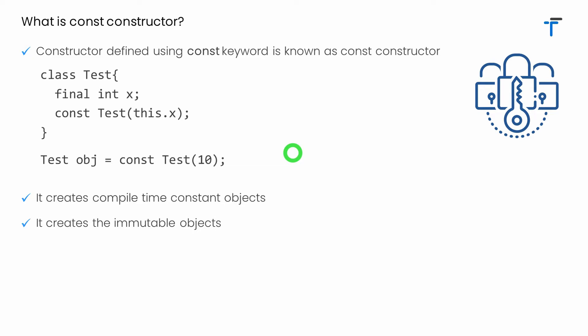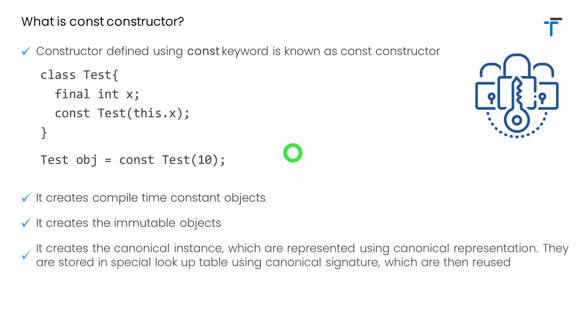Now let me talk about a very important point related to the const constructor. The const constructor creates canonical instances, which are represented using canonical representation. A canonical representation is a kind of standard representation specially made for const objects. All these const objects are stored in a special lookup table using the canonical signature, and whenever we create an object with the same value, instead of creating a new object, the existing object from the lookup table is reused.